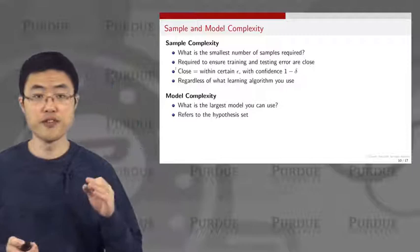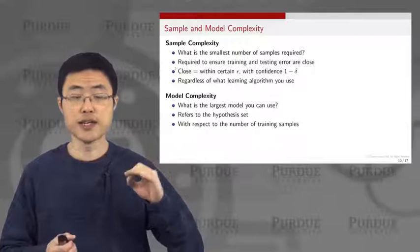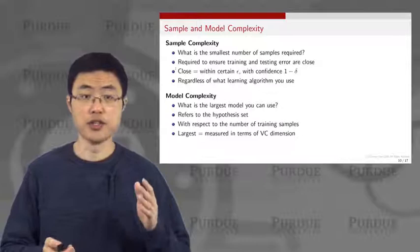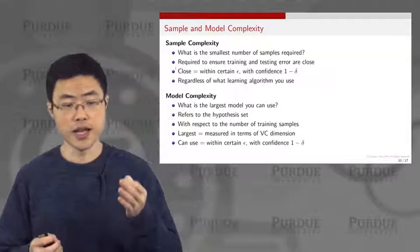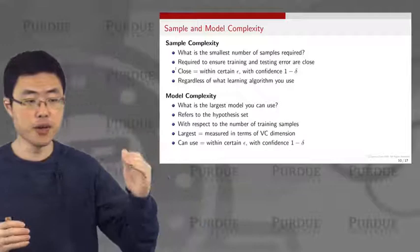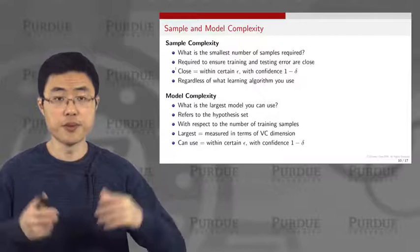This refers to the hypothesis set, and this complexity has to be taken relative to the number of training samples. Largest is measured in terms of the VC dimension, and we want to measure it using the concept of epsilon and 1 minus delta. So we want to quantify the notions of sample complexity and model complexity, generalize these two ideas from the generalization bound, and see the interaction between them.